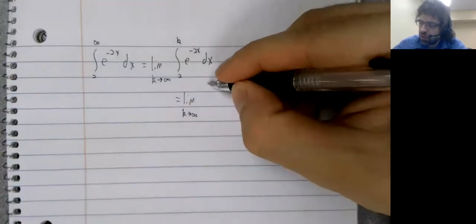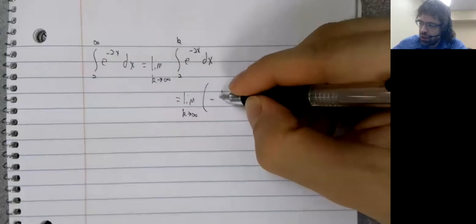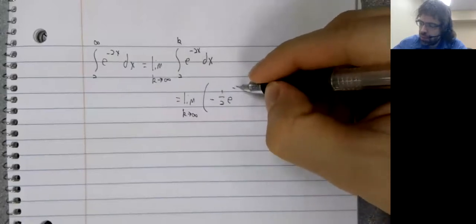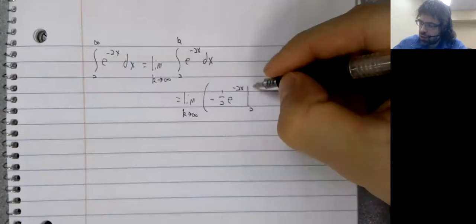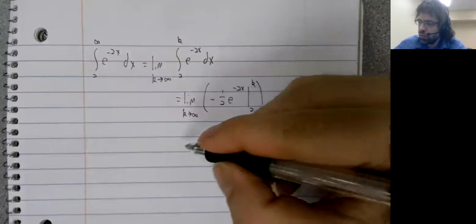Let's see. Negative one-half e to the negative 2x from 2 to k.